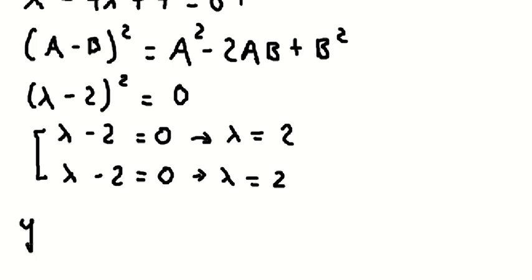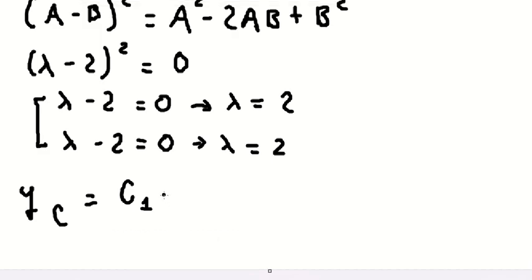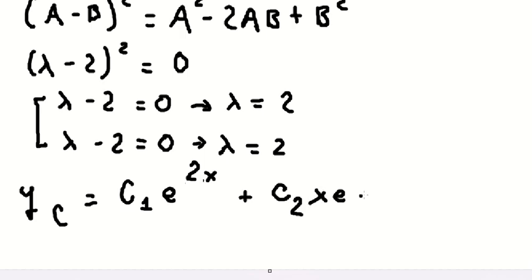From this, we have two solutions that have the same value: λ equals 2. So we write yc. That is c₁ times e to the power of 2x, where c₁ is a constant. Because we have a repeated root of 2, we also have c₂ times x times e to the power of 2x. And that is yc.